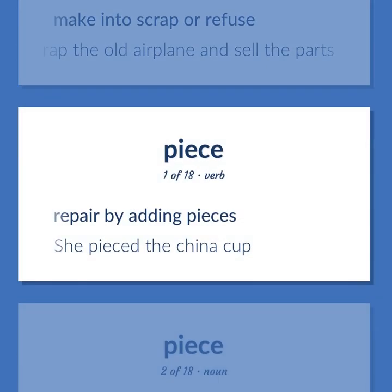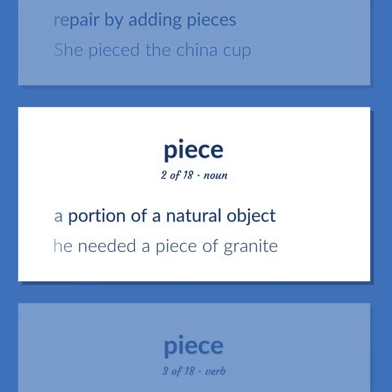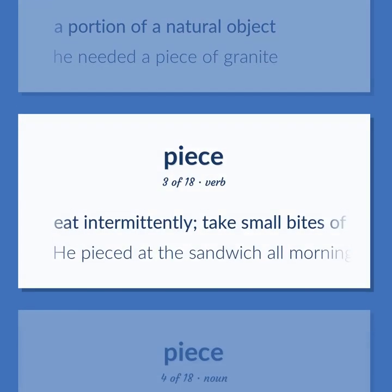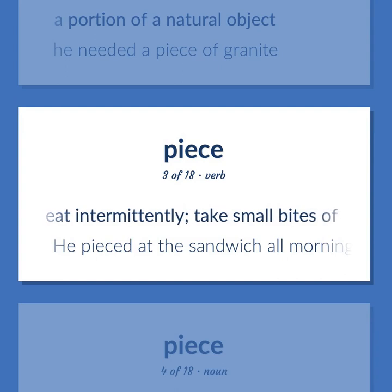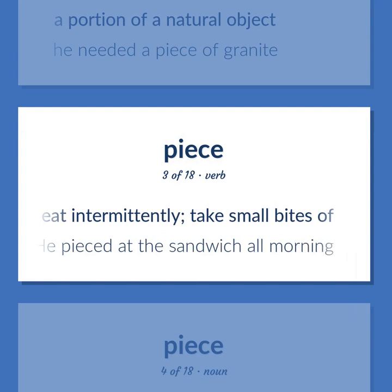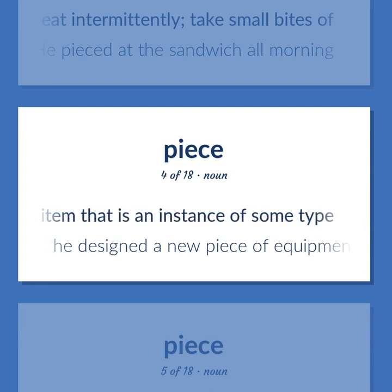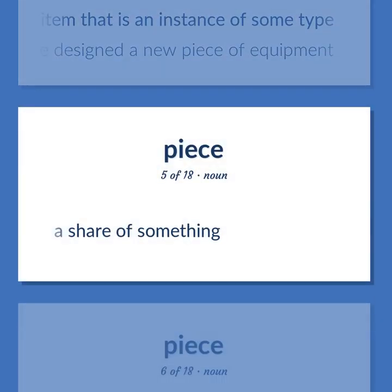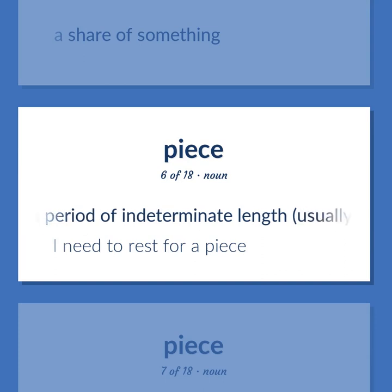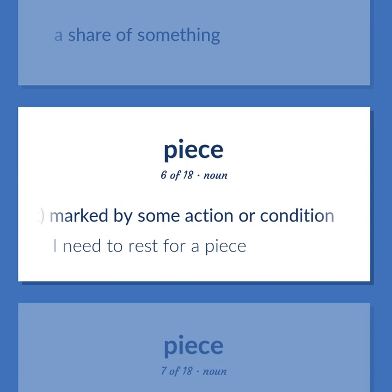Piece: Repair by adding pieces. She pieced the china cup. A portion of a natural object. He needed a piece of granite. Eat intermittently, take small bites of. He pieced at the sandwich all morning. An item that is an instance of some type. He designed a new piece of equipment. A share of something. A period of indeterminate length, usually short, marked by some action or condition. I need to rest for a piece.